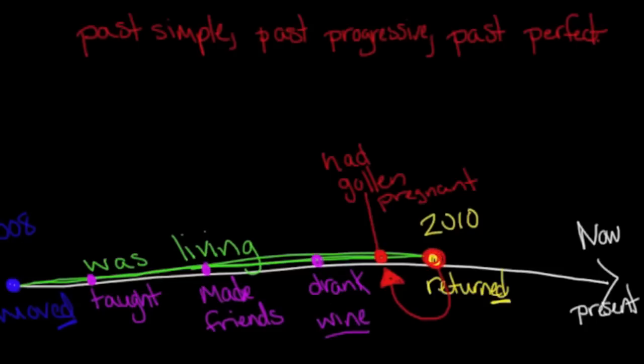So let me just give you some tips here. Generally, past simple is the most common. We use past simple about 60% of the time. Past progressive or past continuous is the next most common, probably about 30% of the time. And then past perfect is our least common past tense. It's about 10% of the time.